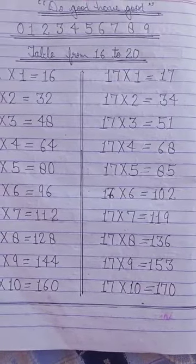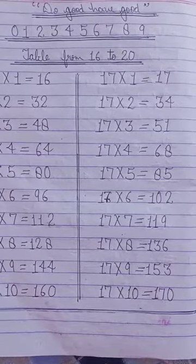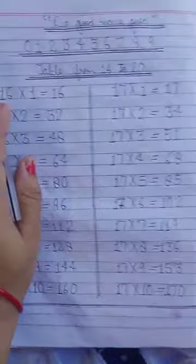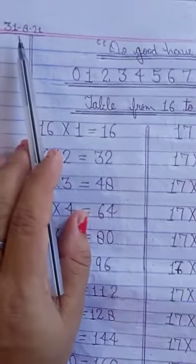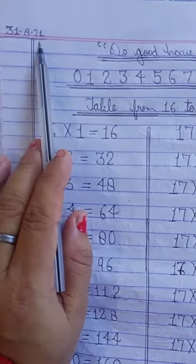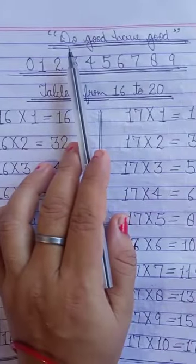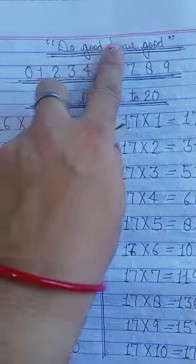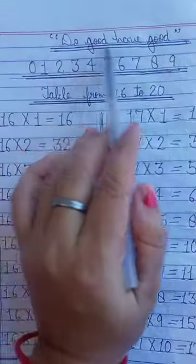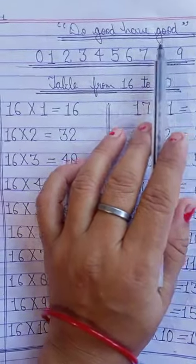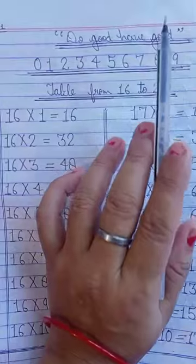Now for table, you open your classwork copy and after word problem, you open your next page. Firstly you write date 31st August 21, then you write in first line quotation, do good, have good, with one finger gapping and draw line, horizontal line with the help of scale. And writing should be neat and clean.